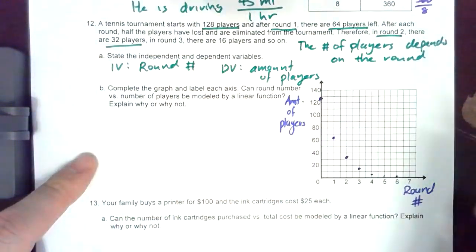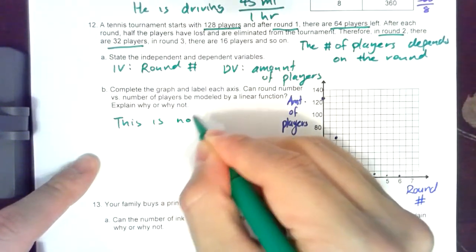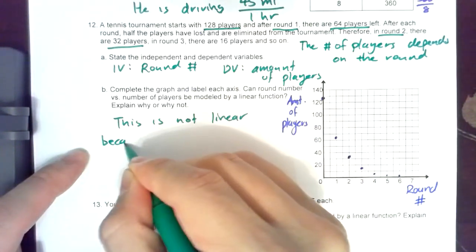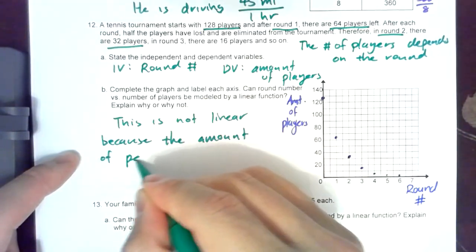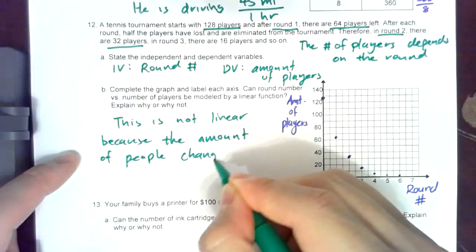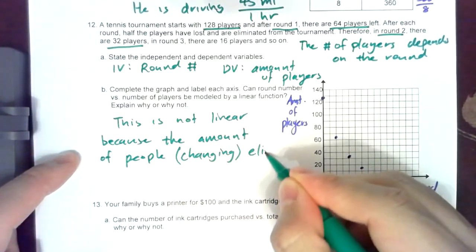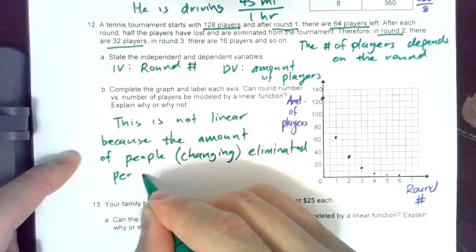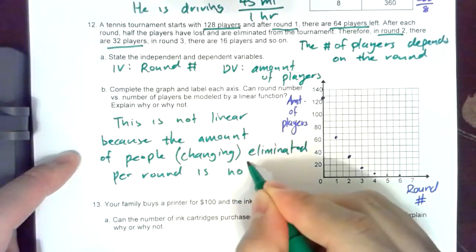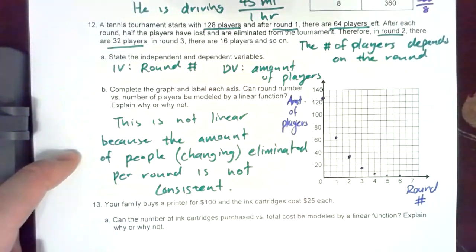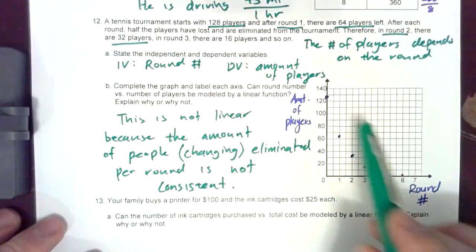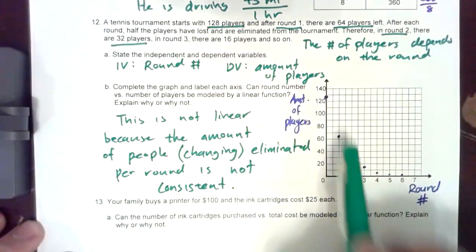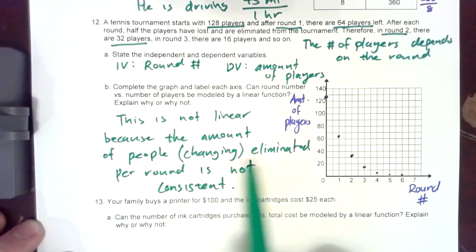Explain why or why not this is linear. This is not linear because the amount of people changing per round or being eliminated per round is not consistent. We're not losing the same amount of people every round. If we were then it would be a negative straight line, but since we're losing half the group every time you know that this is not linear because the amount of people being eliminated from the group per round is not consistent.